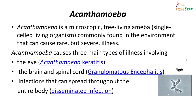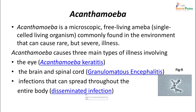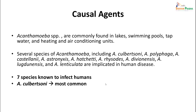Another important amoeba is Acanthamoeba - a microscopic free-living, single-celled organism commonly found in the environment that can cause rare but very severe illness. It can cause three types of illnesses: infection of the eye known as Acanthamoeba keratitis, infection of the brain and spinal cord known as granulomatous encephalitis, or disseminated infection spreading throughout the body. The Acanthamoeba species are commonly found in lakes, swimming pools, tap water, and heating and air conditioning units. Several species are known to infect humans, including A. culbertsoni, A. polyphaga, and others.